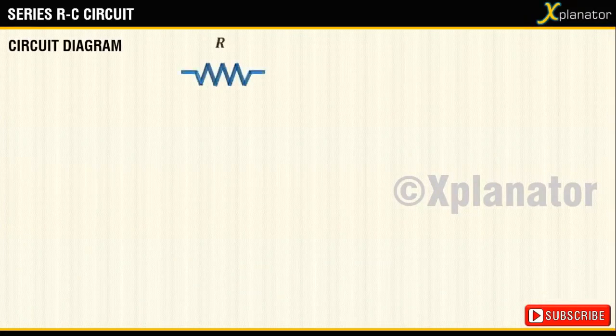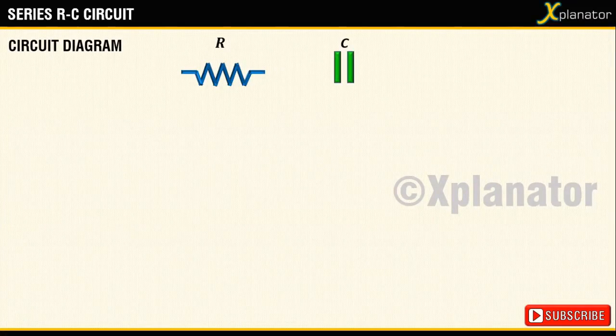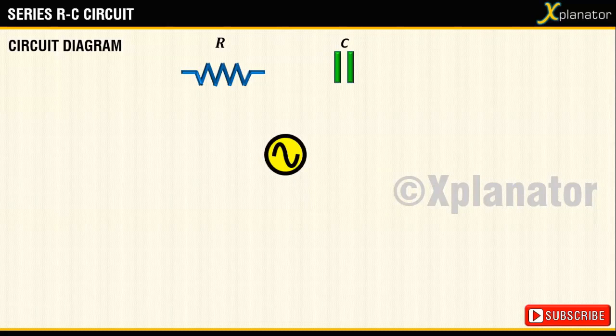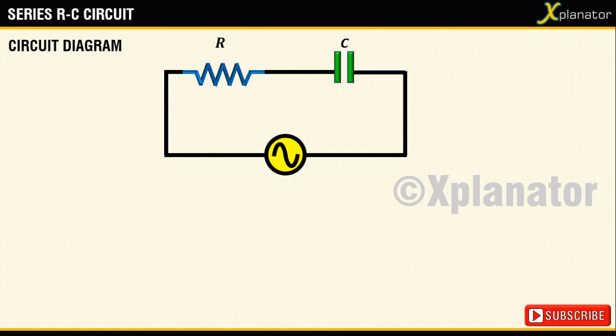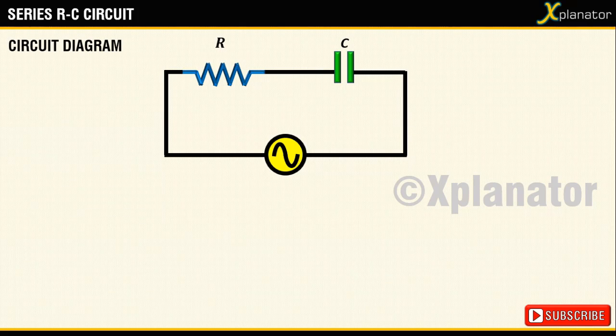To build a series RC circuit, we need a resistor, a capacitor, and AC supply. Putting them in series means that the same current flows through the resistor and the capacitor.